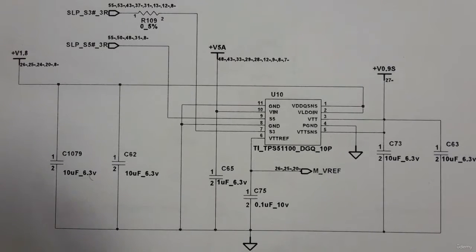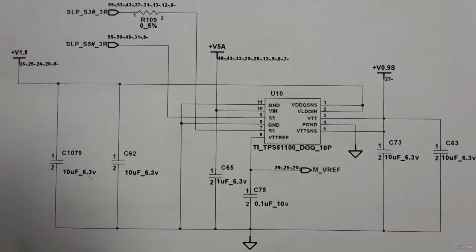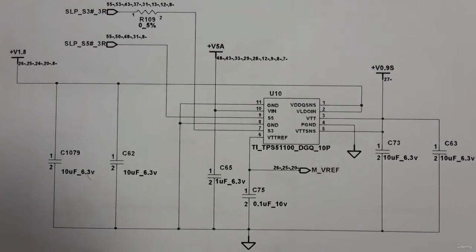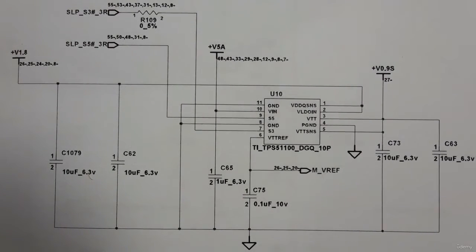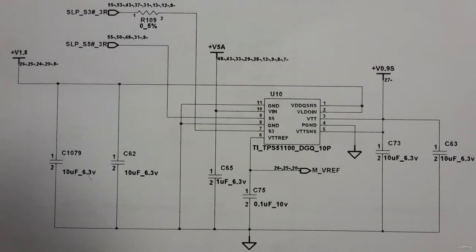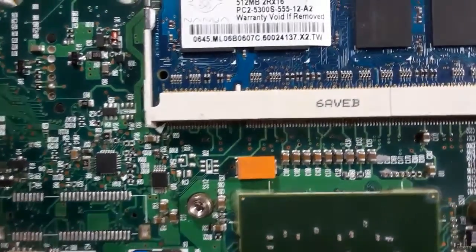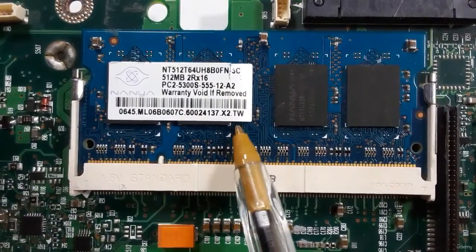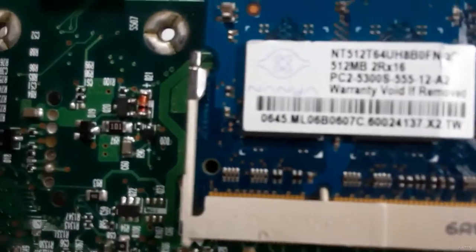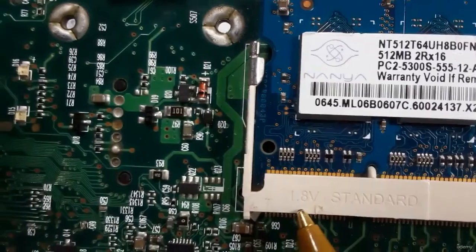In this schematic, the RAM is DDR2. As you know, the main power or working voltage for DDR2 is 1.8V. Here on the motherboard, this is a DDR2 slot.